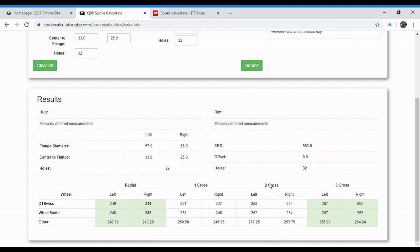For 32 hole, I pretty much always default to two to three cross. 24, 28, usually two cross. And then anything above 32 hole, I usually go three cross for 36 as well. Anything beyond 36 hole, I usually do four cross.